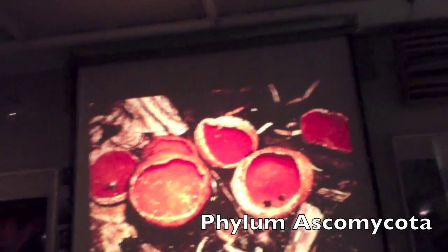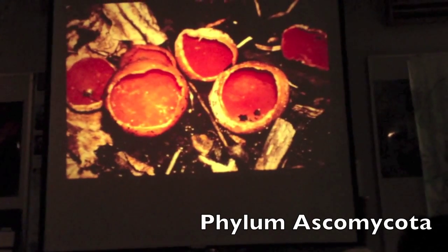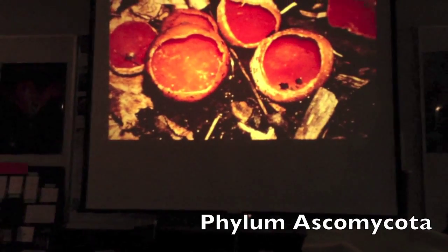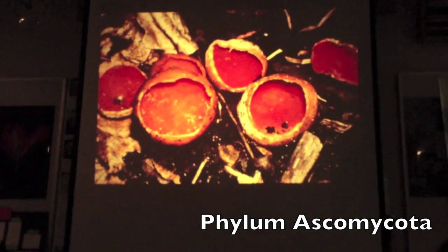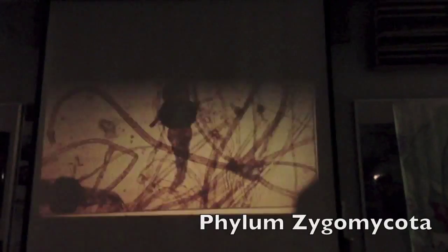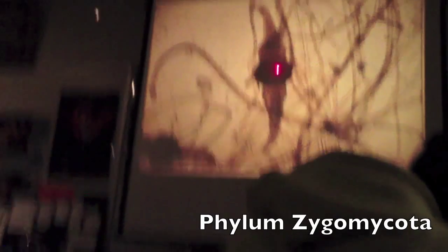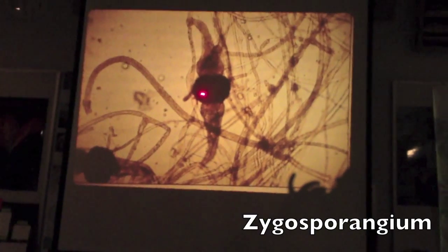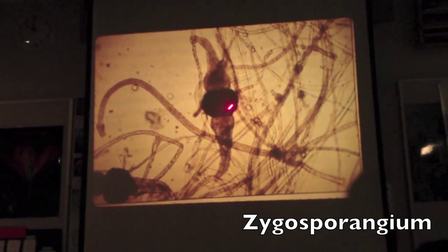What phylum? Let's back up. What structure is it? It looks like a cup. Cups — the phylum — this would be an ascocarp. So the phylum is Ascomycota. What phylum? Zygomycota — the bread mold. And so that makes this structure — when two gametes fuse — a zygosporangium, or a zygospore.